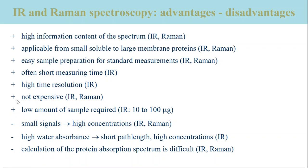Disadvantages: for ordinary infrared and Raman spectroscopy, the signals are weak. This requires high concentrations of the molecule of interest, which is not always possible to achieve, for example because some proteins aggregate. Note, however, that the amount of sample for infrared spectroscopy is small — several micrograms — because the sample volume is small, a few microliters.